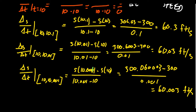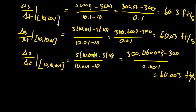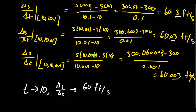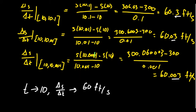What we're seeing is the following pattern: as t approaches 10, delta S over delta T seems to be approaching 60 feet per second. Now, 60 feet per second is roughly around 40 miles per hour, which is quite a reasonable speed for a car. Notice this idea that we're shrinking the interval smaller and smaller, approaching closer and closer to t = 10. This is the limit process — this is what limits are all about.